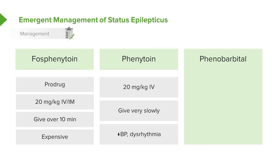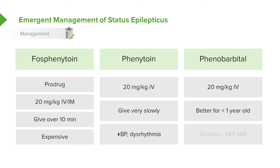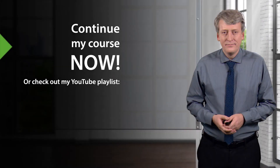Phenytoin can also cause low blood pressure and dysarrhythmias. Phenobarbital is also 20 mg per kilo. You can see an easy dosing scheme here. It's better for children typically under 1 year of age, but can cause sedation, low blood pressure, or a low respiratory rate. So be ready to provide some respiratory support.